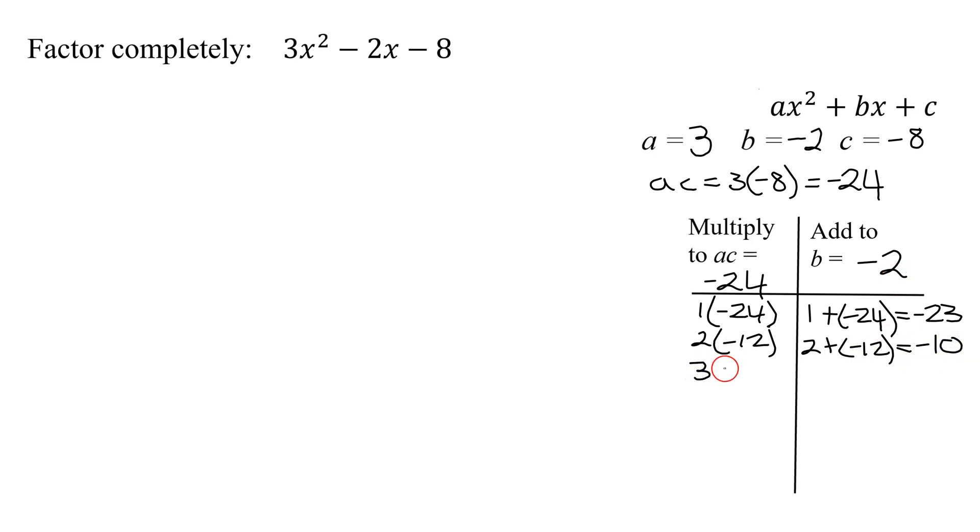Does 3 divide into 24? Yes. I'm going to get 3 times -8 is -24. And 3 plus -8 is -5. Getting closer. Does 4 divide into 24? Yes. So I'm going to get 4 times -6 is -24. And 4 plus -6 is -2. Eureka! I found the number I'm looking for.